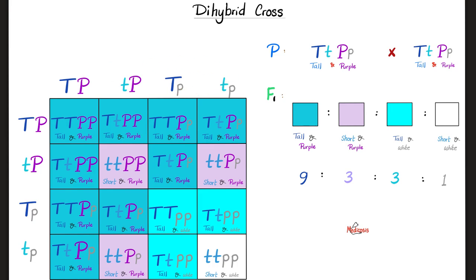When you do all of this, you will find the following results. Some of them were tall and purple. Some of them were short and purple. Others were tall and white, and few were short and white. And this is color-coded.